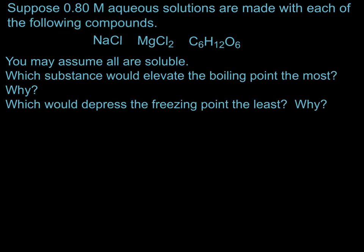Let's do a colligative properties example where we have 0.80 molar aqueous solutions made with each of the following compounds: sodium chloride, magnesium chloride, and glucose. We're told that all of them are soluble. Which substance would elevate the boiling point the most and why? Which would depress the freezing point the least and why? The way we would tackle this problem...